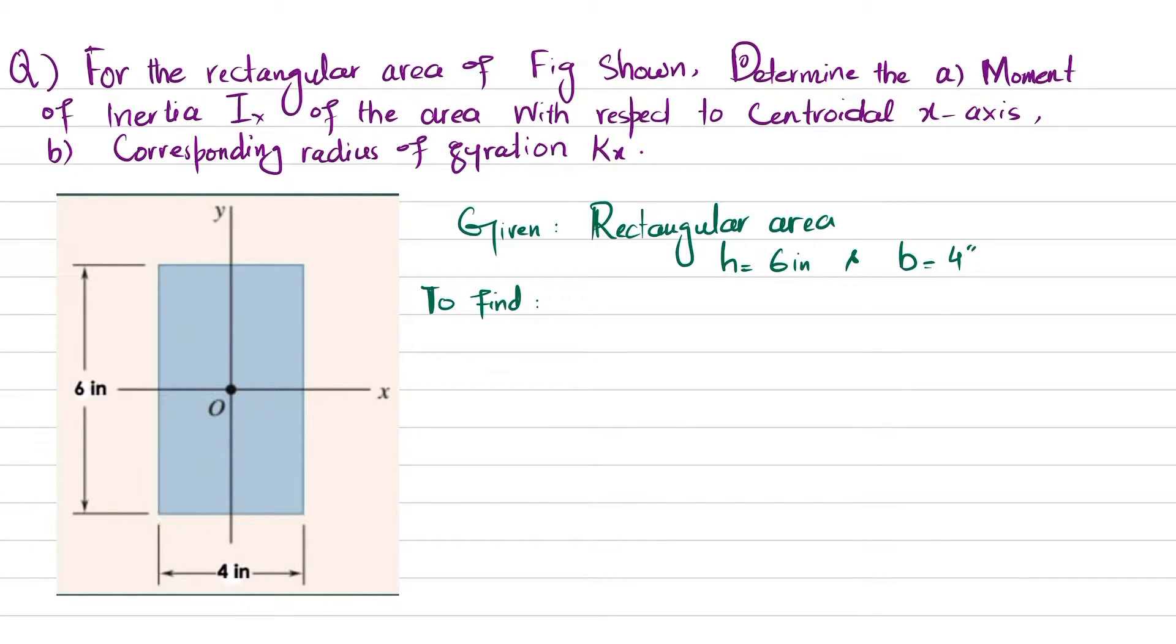So we have to find in part a, the moment of inertia which is Ix with respect to centroidal x-axis, and in part b we have been asked to find the radius of gyration which is represented as rx.